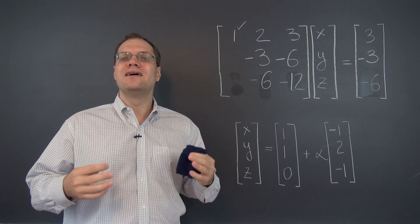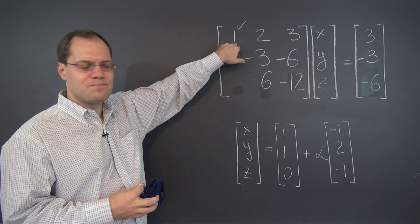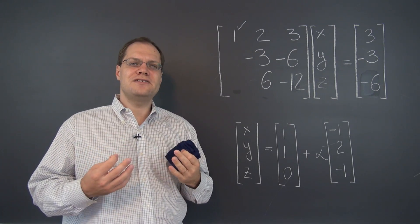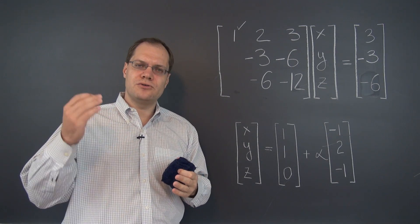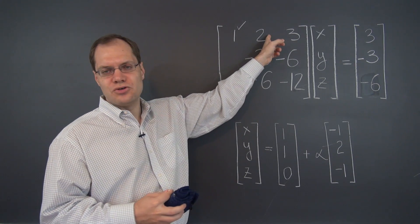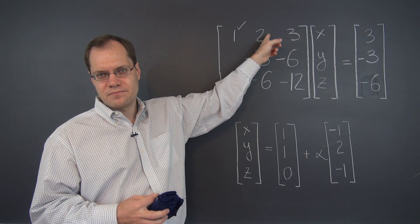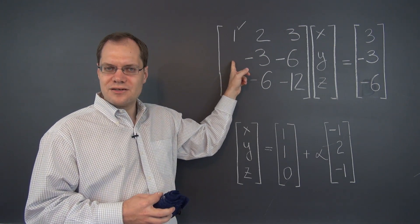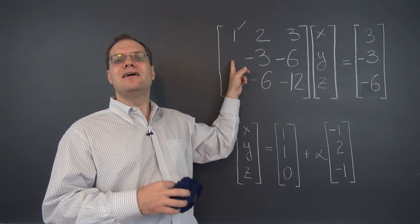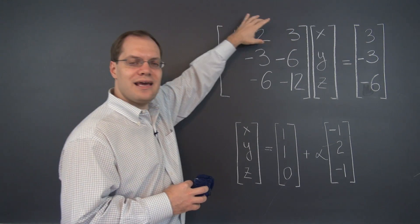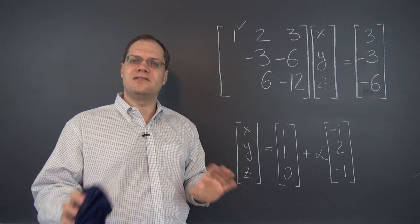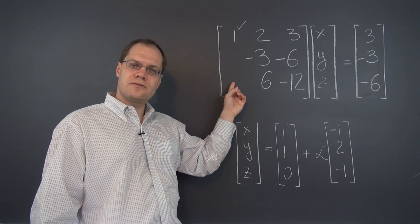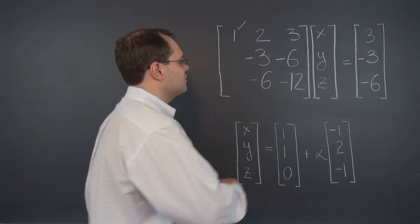Alright, let's do some more eliminating. Now let's choose another pivot, because this pivot is done — everything below it is eliminated and there's nothing above it. The convention is to always choose the leftmost, topmost entry. You might think it could be this two, but we cannot use that two as a pivot. If we started using it to eliminate, say, minus three, it would undo the elimination obtained in the previous step. So we won't use any other numbers in the first row as pivots. We will use this negative three as our next pivot.